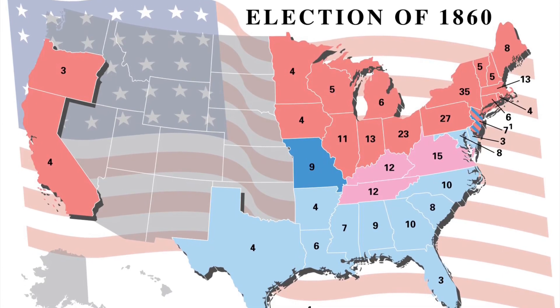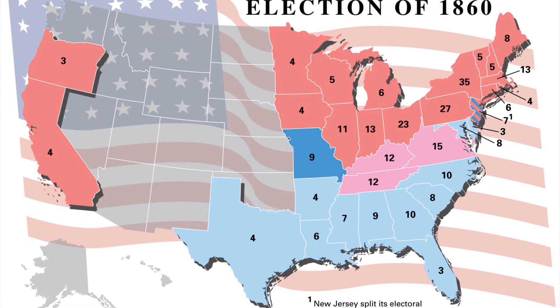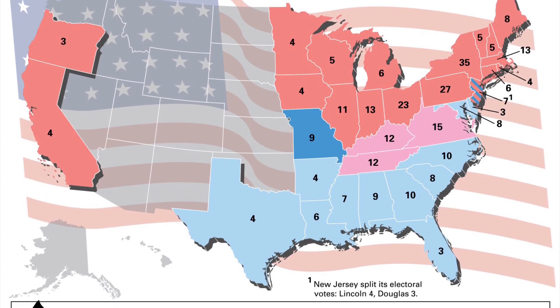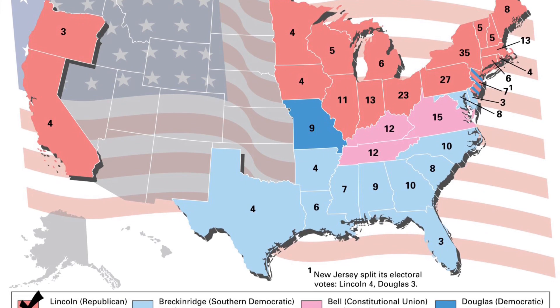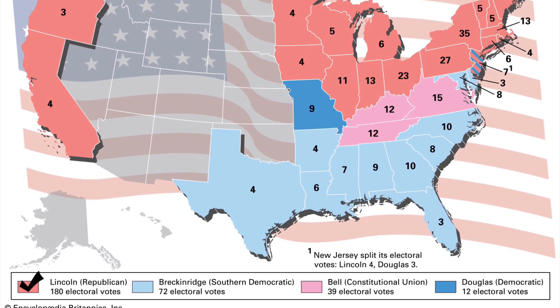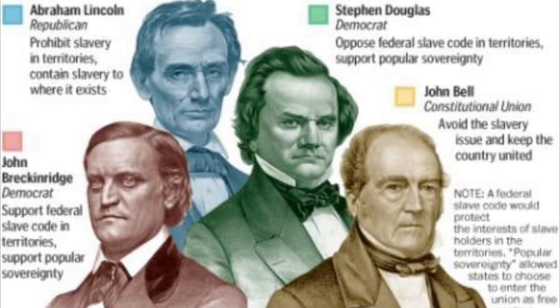The election of 1860 was between presidential candidates Abraham Lincoln, Stephen Douglas, John Bell, and John Breckinridge.